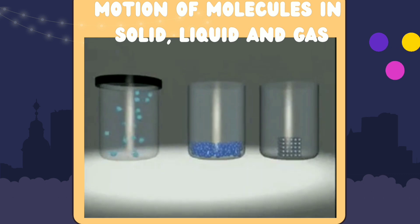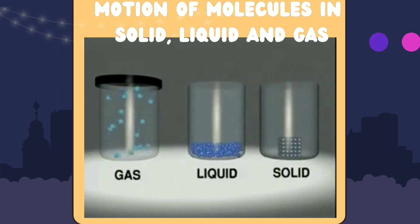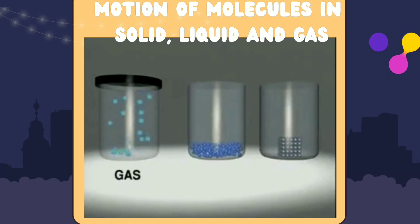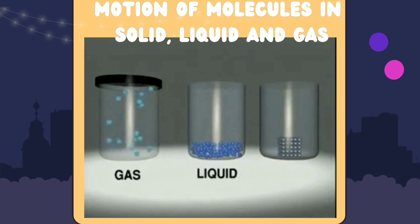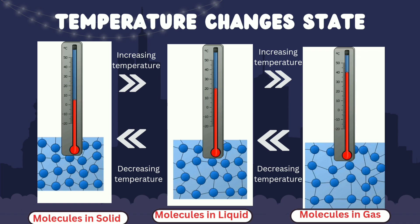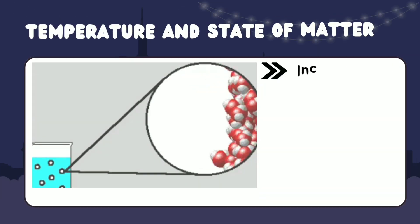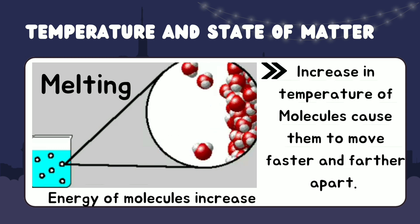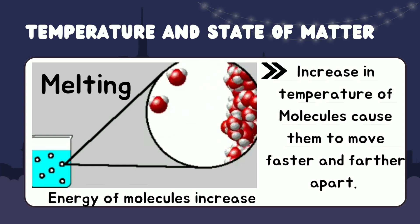Let's dive deeper into how matter changes its states. It all starts with the molecules that make up matter. These tiny building blocks are in constant motion and interact with each other, and the state of matter they form depends on the strength of these interactions and the amount of energy they contain. When matter is heated or cooled, these interactions and energy levels change, causing the matter to transition from one state to another. For example, when we heat up a solid, the energy of its molecules increases, causing them to move faster and farther apart. As they spread out and break apart from their organized structure, the solid turns into a liquid. This process is called melting.